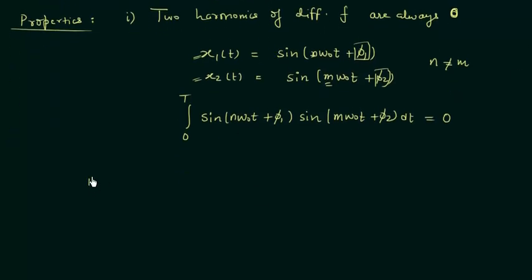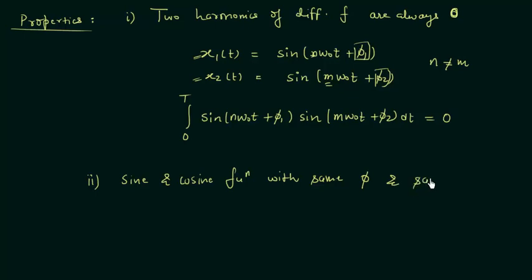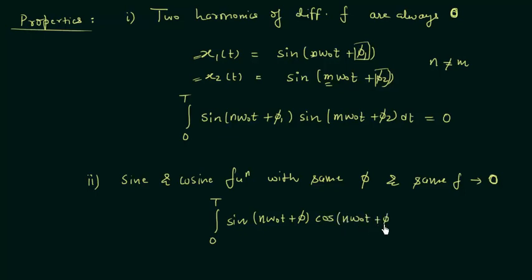In the second property, sine and cosine functions with the same phase and same frequency are orthogonal. This means integrating sin(nω₀t + φ)·cos(nω₀t + φ) from 0 to T equals zero. The frequencies are the same and also the phase.